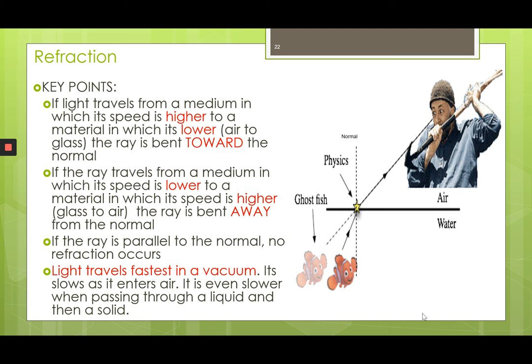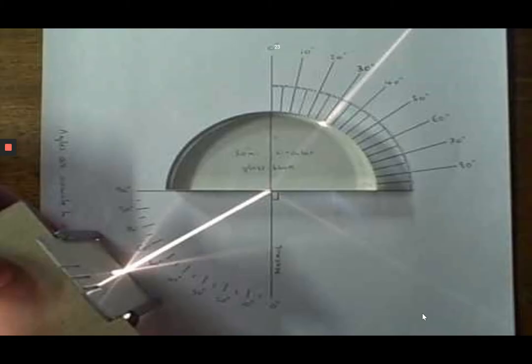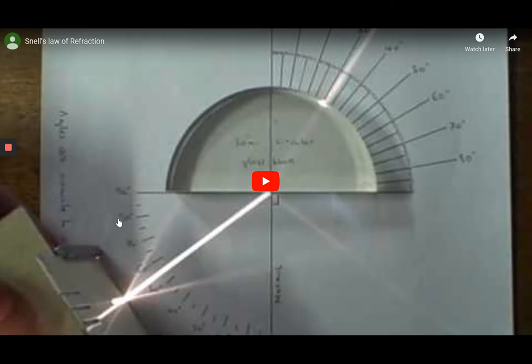Light travels fastest in a vacuum. The less dense a substance is, the faster light can move through it. The more dense a substance is, the slower it will move.